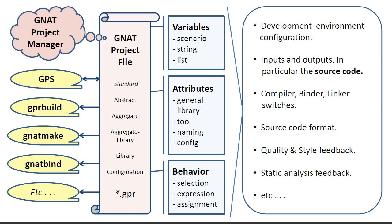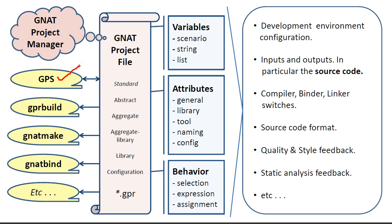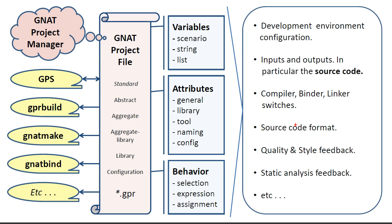Several GANAP tools are able to accept a project file as an input parameter. For developers, the most important tool is GPS, the GANAP programming studio, which integrates all the tools into one place. At the right of the diagram I've listed some typical properties that one can specify in a project file — for example, the development environment must be set up to support your strategy, where the inputs are, where the outputs go, the switches that apply to each tool, the source code format to use, the quality and style rules, static analysis details, and the list goes on. It requires a bit of work and experimentation to get it right, but when it's finally done, it will lay the foundation for an efficient development environment.